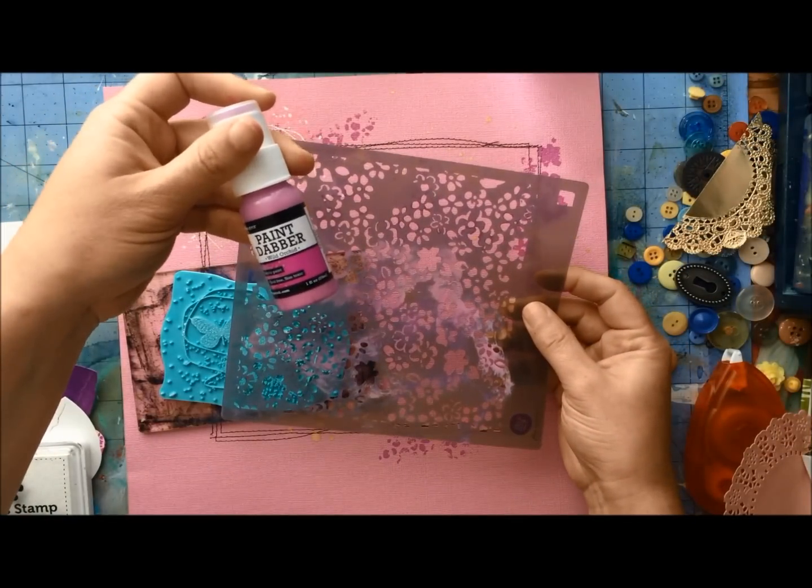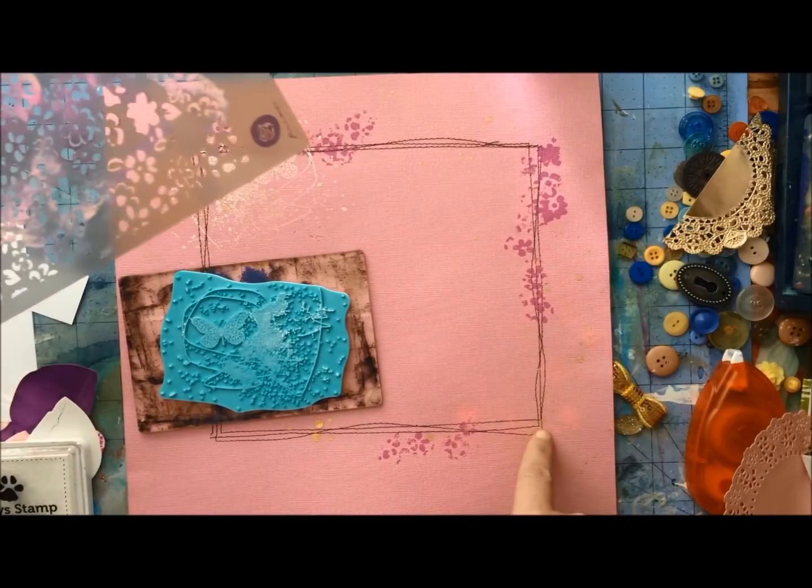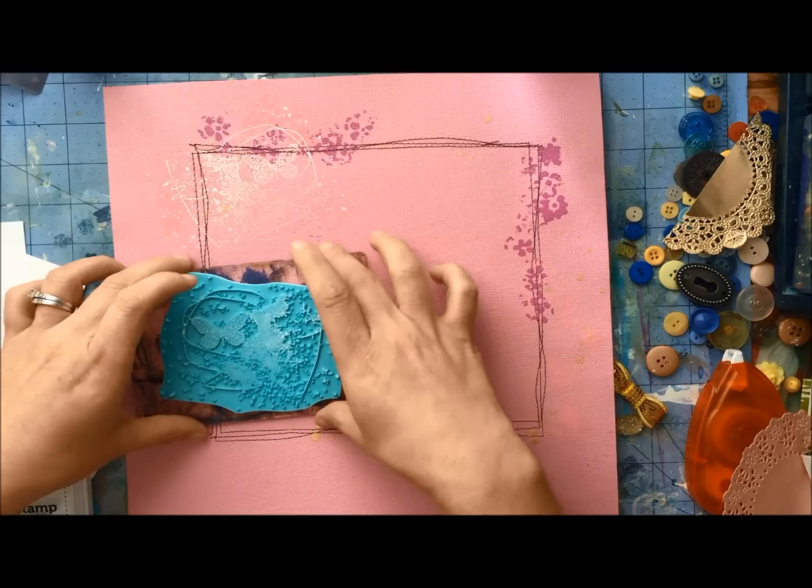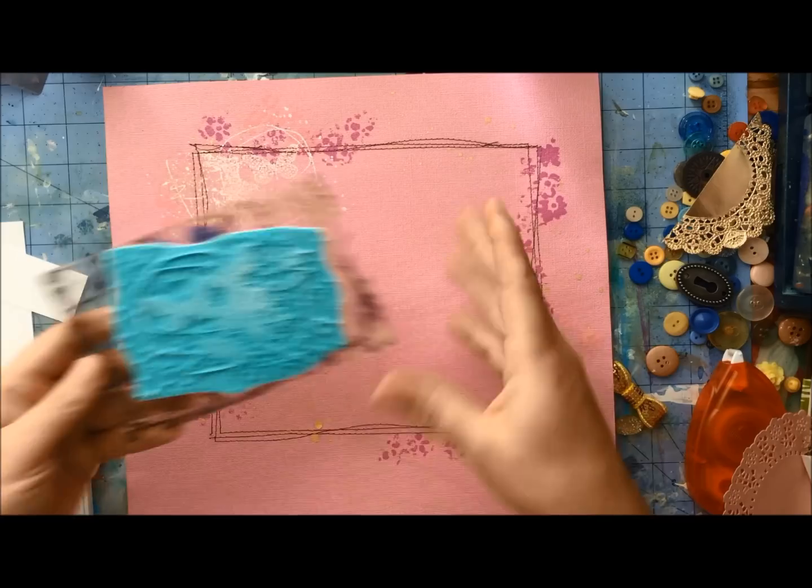With some wild orchid paint and the same stencil, I went and repeated with the darker color and that pops out a little more. I still want to add some contrast and I was going to go with black, except that I do have the black stitching. So I decided to go with white.